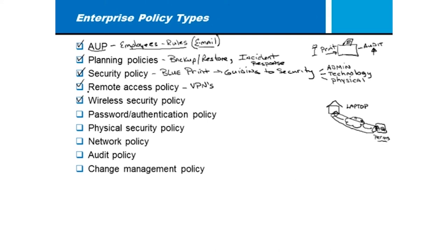Wireless security policies will usually cover device security requirements and the type of approved device. People will bring their own wireless router from home into your office so their phones, smartphones, and tablets can connect to your network without paying for cellular service. So we also need security requirements around guest wireless access — allowing visitors to reach the internet through your company network but not allowing internal access.